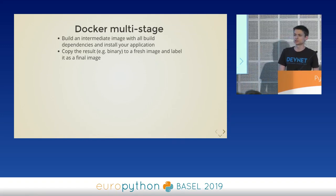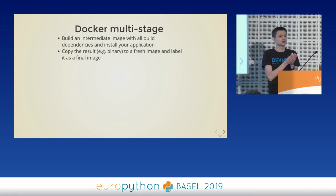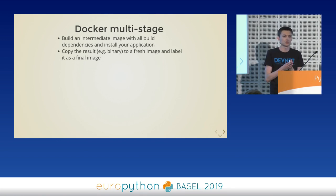Docker multi-stage builds address this. The idea is to build an intermediary image with all build dependencies and install your application there, then copy the result to a fresh final image. You have two separate images: one where you do all the building, and one where you package your application for runtime use. The resulting image size is smaller because you have no build dependencies, and it could be faster because you can now cache all of those build dependencies without having to delete them.